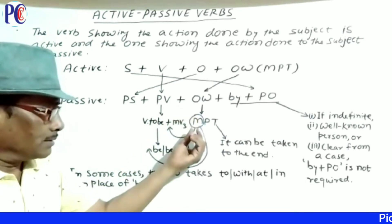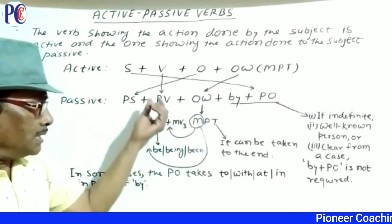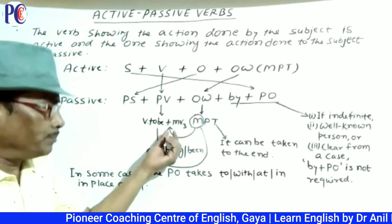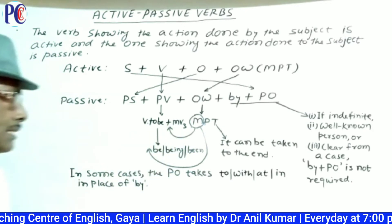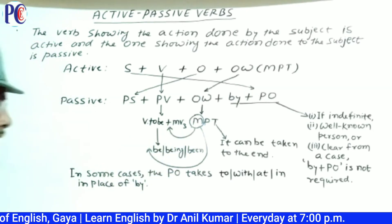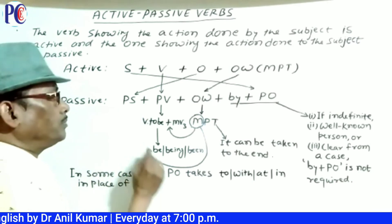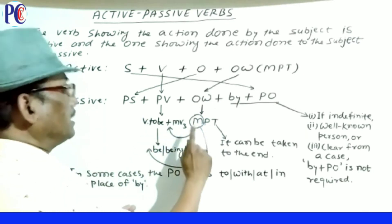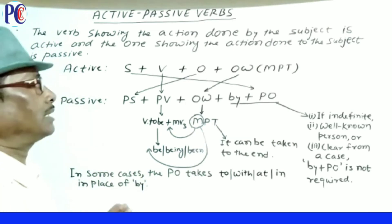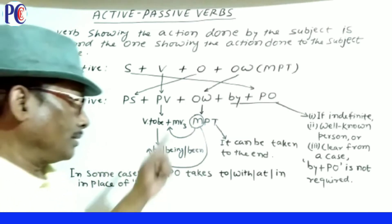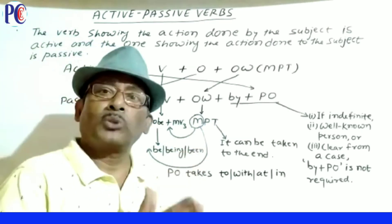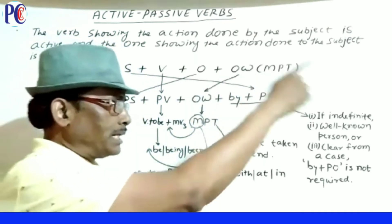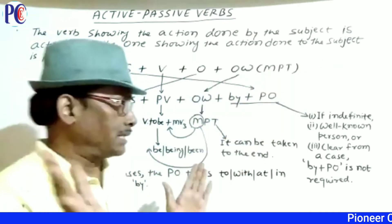Regarding adverb of manner: if the passive verb has 'being', the adverb of manner goes before 'being'. If the passive form contains 'be' or 'been', the adverb of manner goes before the past participle (V3). Adverb of place stays in its original place after the passive verb. Adverb of time can be moved to the very end.